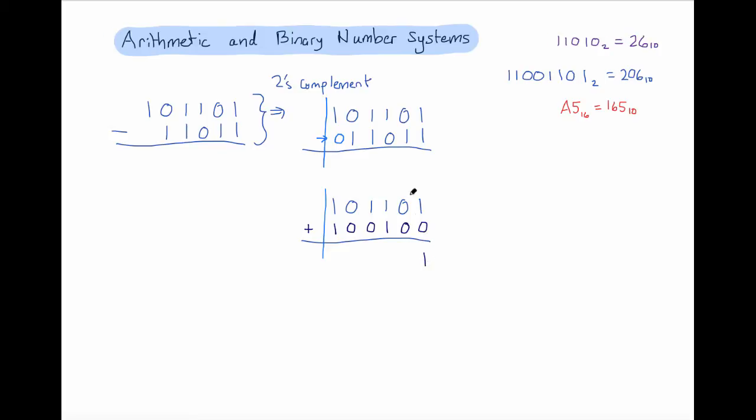So one plus zero is one, zero plus zero is zero, one plus one is zero, carry the one, one plus one is zero, carry the one, one plus one is zero, carry the one, and what I'm left with here is a number that's only one away from the number that I actually want.